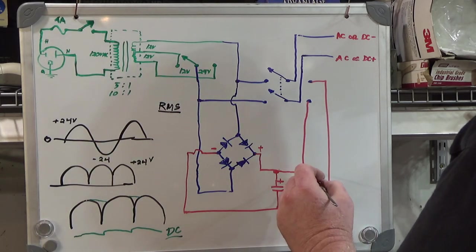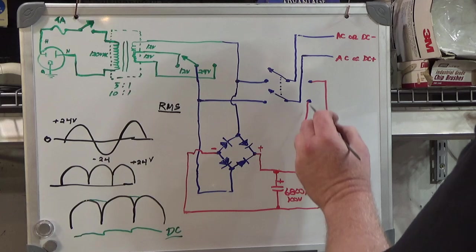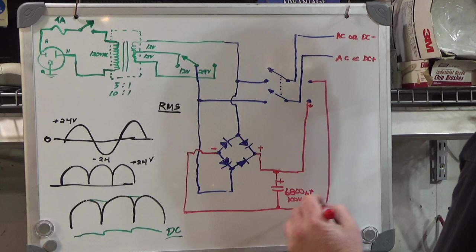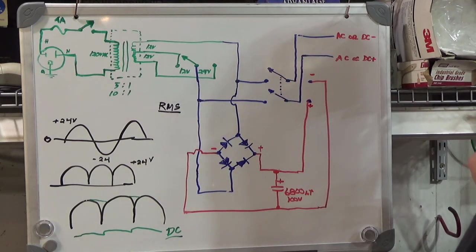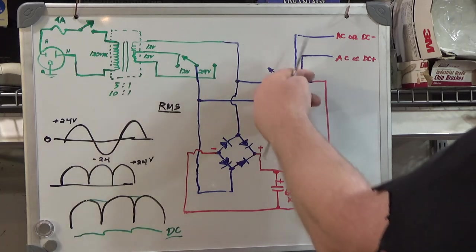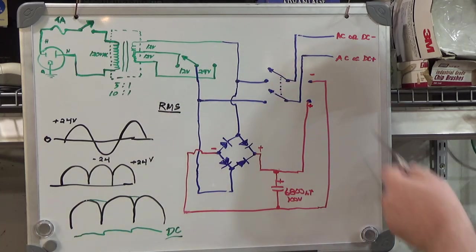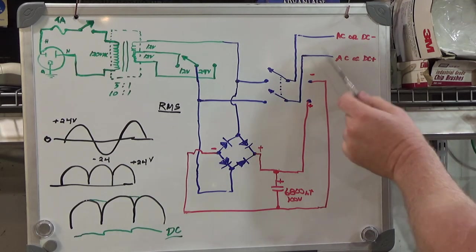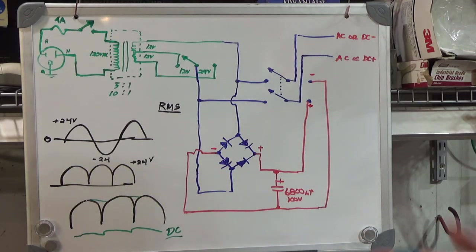So once you've got the DC on the output of the capacitor, the positive goes up to here and the negative comes up to here. When you flip these switches to this side, it takes both output contacts and connects them to the DC side. You've got DC negative up here and DC positive down here. So that's the power supply in a nutshell.